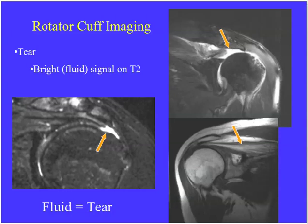A massive tear with retraction represents a massive rotator cuff tear. These are T2-weighted images with fat saturation and fluid in the joint space. On a T1-weighted image — bright subcutaneous tissue, bright bone, no fluid in the joints — if you see high signal streaks within the supraspinatus muscle, that represents extensive fatty atrophy of the supraspinatus muscle.